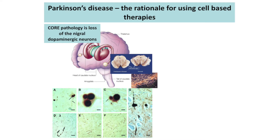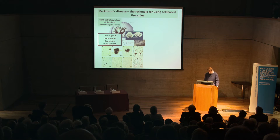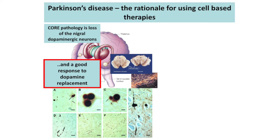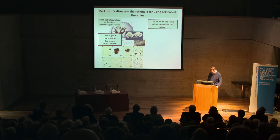That loss of dopamine cells is what we're trying to address with cell-based therapies — we're trying to replace those lost dopamine cells. We know that should work because when we give people dopamine drugs they do fantastically well for many years. So there is absolutely no reason to believe that putting dopamine into the brain in the form of cells wouldn't work as well.